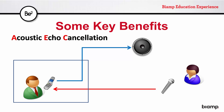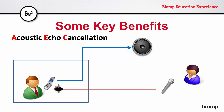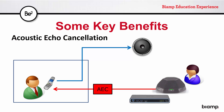Acoustic Echo Cancellation, or AEC: without any AEC, a remote participant's audio comes out of your speakers, goes into your microphone, and gets sent right back to them. With AEC in place, this type of echo is no longer a concern. Powerful AEC is important for natural sounding and productive distance conferencing.